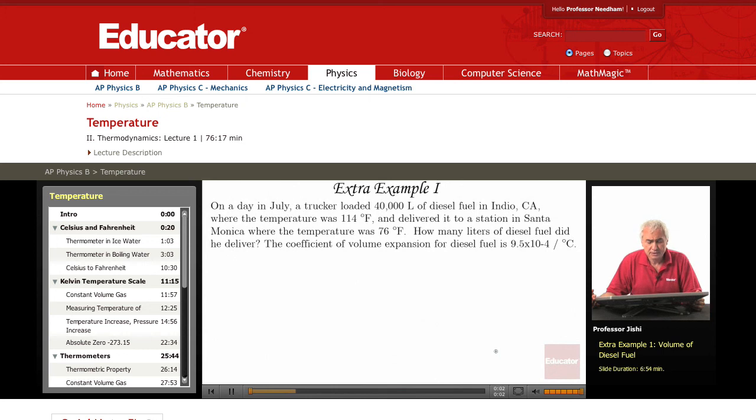Now through Extra Example Number 1. On a day in July, a trucker loaded 40,000 liters of diesel fuel in Indio, California where the temperature was 114 degrees Fahrenheit. Indio is somewhere inland, about two hours from the ocean, so it's quite hot there in July. It's a desert area.